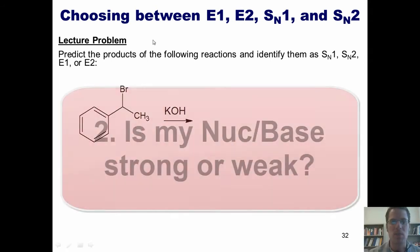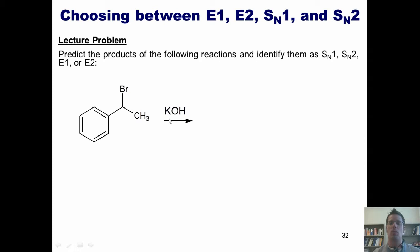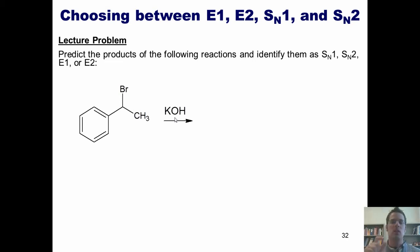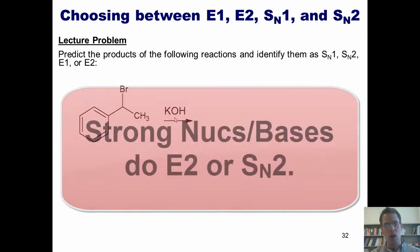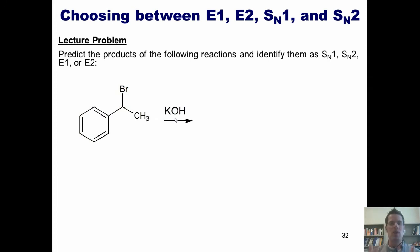That takes me to the next question: is my nucleophile/base strong or weak? We have potassium stuck to hydroxide. Anytime we see a group one metal stuck to another atom, we can pretend that group one metal is really a negative charge. Thus, this will effectively behave as a hydroxide ion. That negative charge is localized to that oxygen, and thus it is strong. Strong nucleophile/bases proceed through E2 or SN2 mechanisms, because they're so reactive they will not wait around long enough for a leaving group to generate a carbocation intermediate.